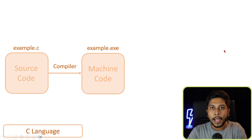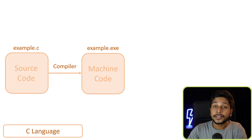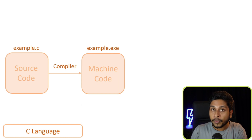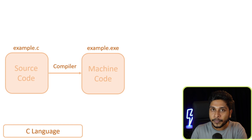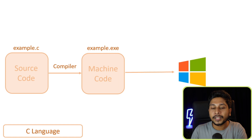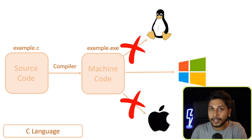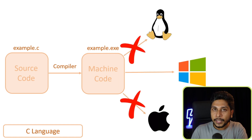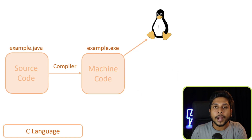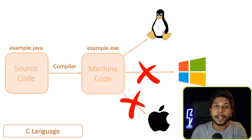Now we are talking about compiled language. If you want to use C language, you can compile it to an executable file. You can run it with an executable file on an operating system. You can compile it for Windows.